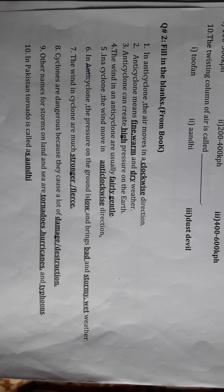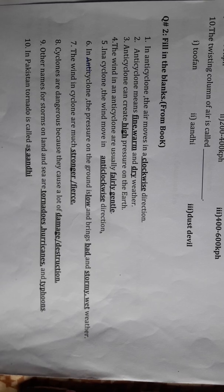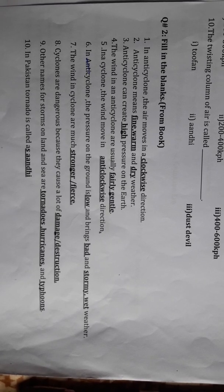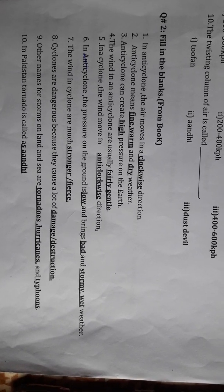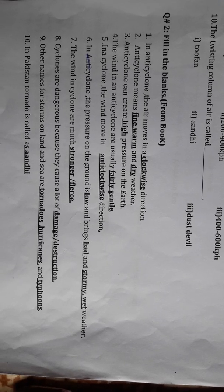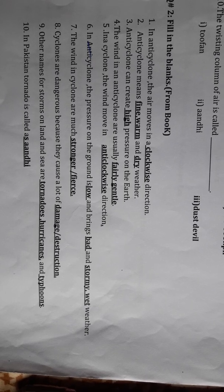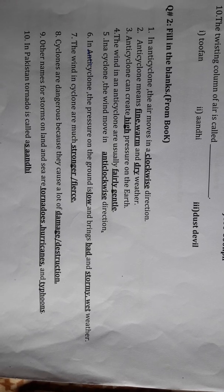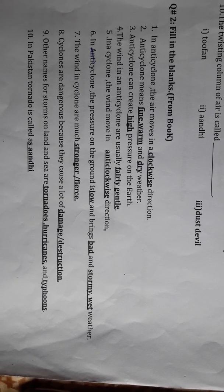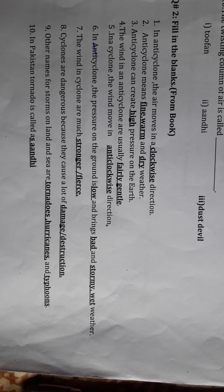Fill in the blanks: In an anti-cyclone, the air moves in a clockwise direction. Anti-cyclone means fine, warm, and dry weather. Anti-cyclone creates high pressure on the earth, and the winds in anti-cyclones are usually fairly gentle. In a cyclone, the wind moves in an anti-clockwise direction.